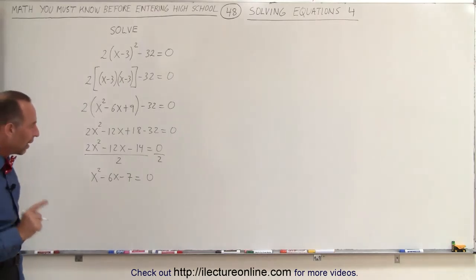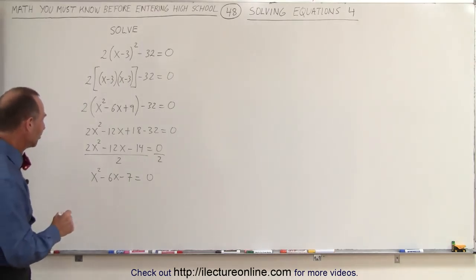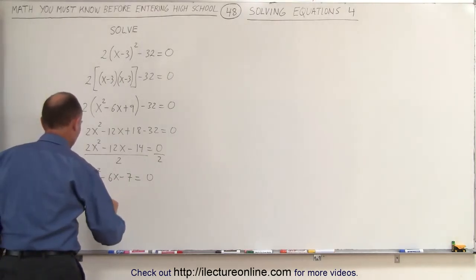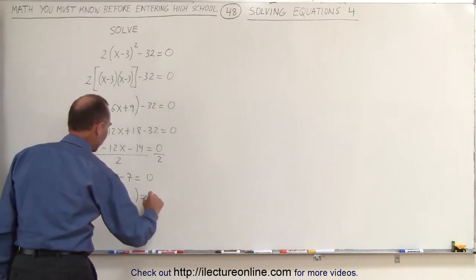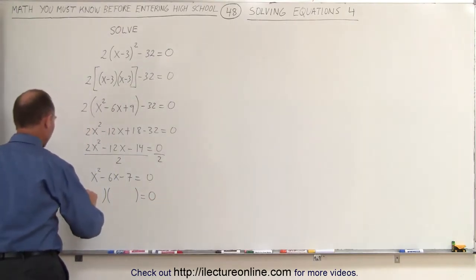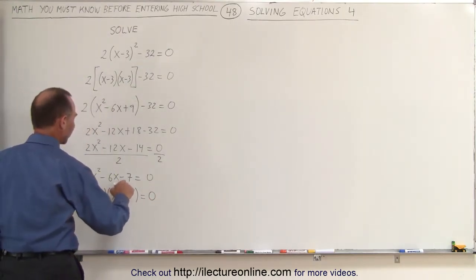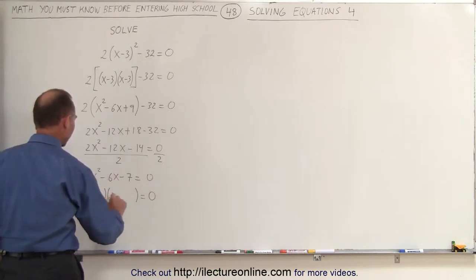Now this looks like something we can probably factor. So then we will write this as the product of two binomials. We have an x and an x with a sign here. That means we have a positive and a negative.